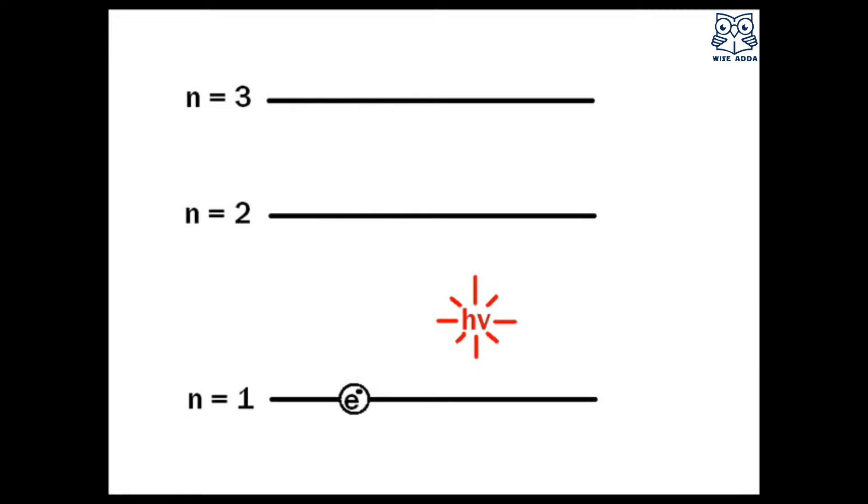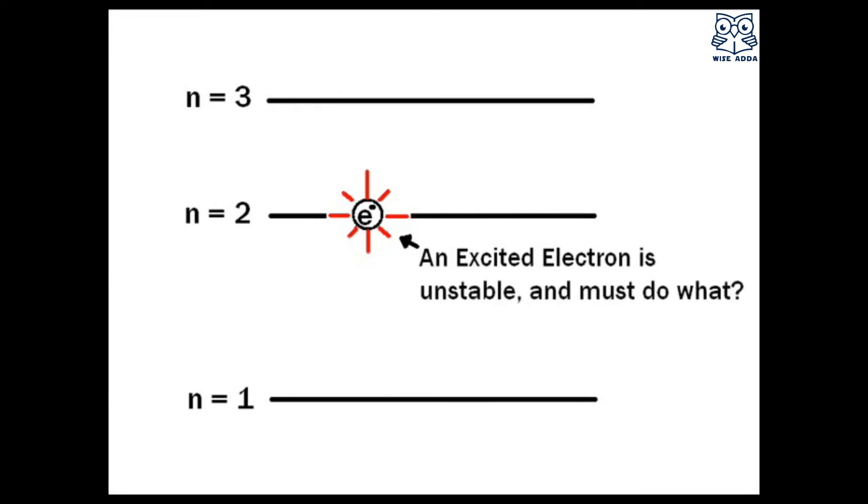As you can see, when you put some energy like this and supply energy to these electrons, the electrons get excited and then go up to the excited state, that is n=2. And an excited electron is always unstable.